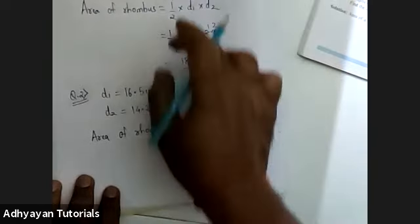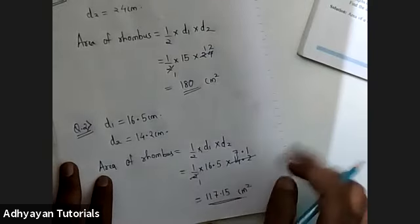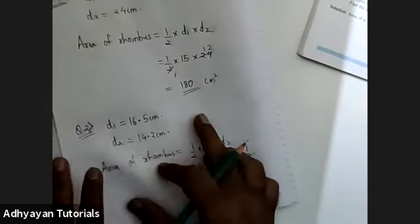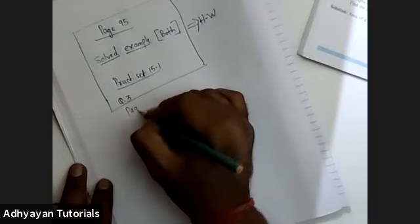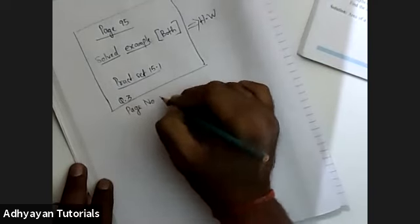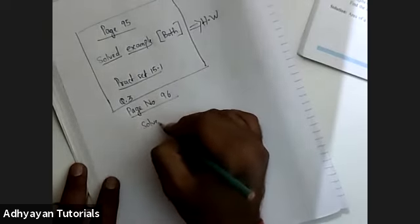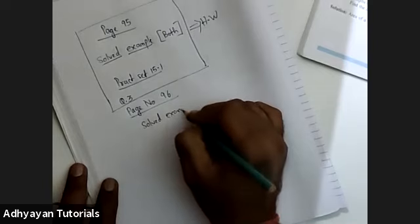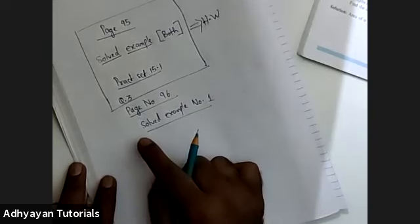Based on these two questions and the previous concept, I would like to add one more sum as homework. Page 96, solved example number one. So how many sums have I given as homework? Here there are two solved examples, one question from 15.1, and one from solved example — so four sums total as homework. Very simple sums they are.